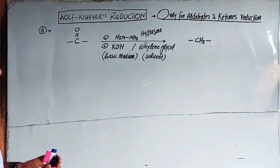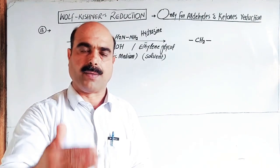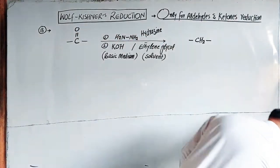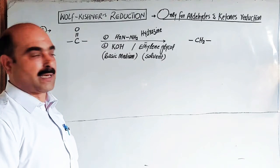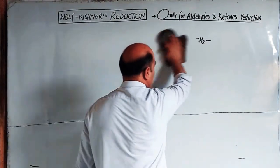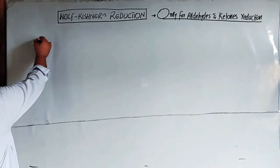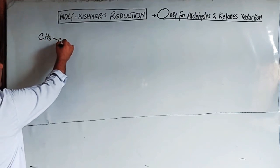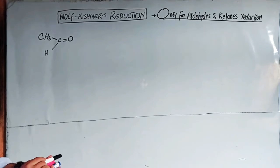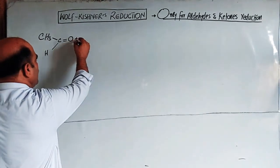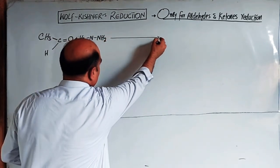To understand how this reaction takes place, we look at the mechanism — the stepwise sequence of chemical reactions showing intermediates and the final product. The reducing agent is hydrazine; the medium is basic with potassium hydroxide; the solvent is ethylene glycol. Now, mechanism of Wolf-Kishner reduction: step number one — take the example of acetaldehyde, CH3-CHO, the carbonyl group.